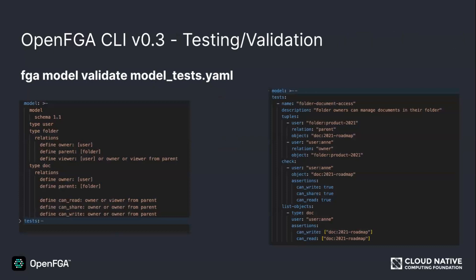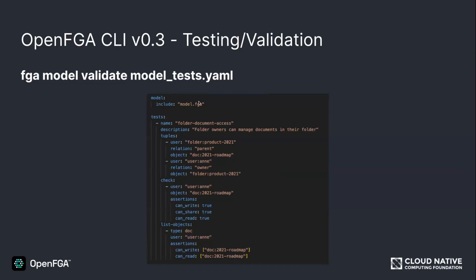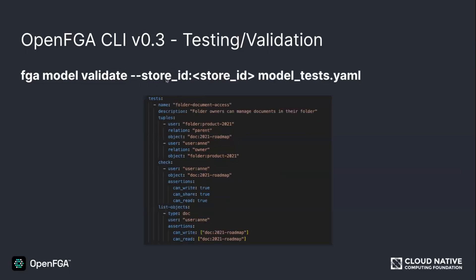The next thing for the CLI — something mentioned in previous meetings — is letting you write tests in YAML format that you can execute from the CLI. This will simplify testing FGA models without needing your own unit test language setup. We're also thinking of letting you run this without launching a server, so you can test FGA models, tuples, and scenarios directly from the CLI without hitting a server. The model and tests can be in the same file, or the model in a separate file referenced from the tests, or tests pointing to a live FGA store.